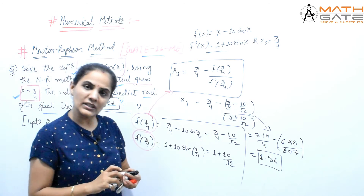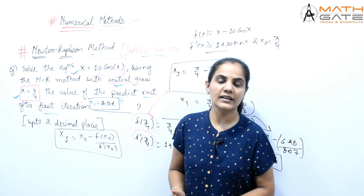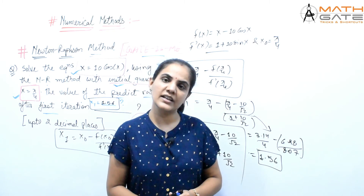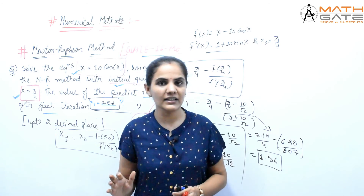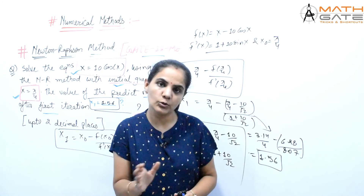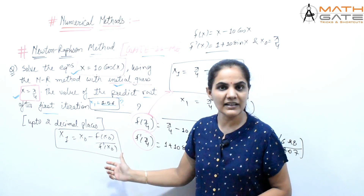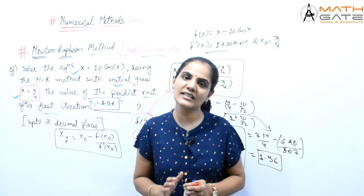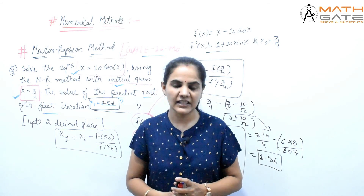Newton-Raphson questions generally ask for the first or second iteration — questions don't go beyond that in GATE. Whether it's the first, second, or third iteration, you can easily find it by applying the formula, provided the initial root is given. Thank you, students.